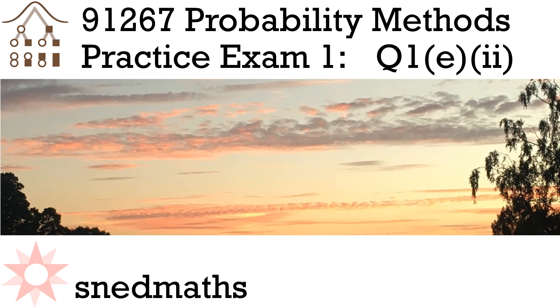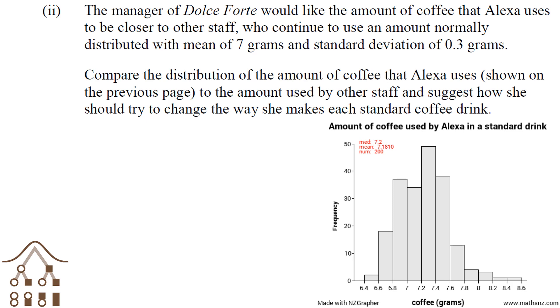This is coffee exam question 1e2. This is where the Excel question comes in. In this question we have to compare the original distribution, the normal distribution with a mean of 7 and a standard deviation of 0.3, to this new one of Alexa making coffees.